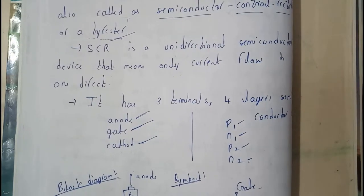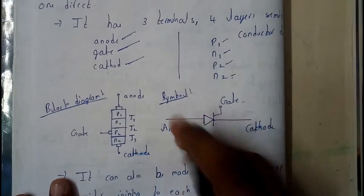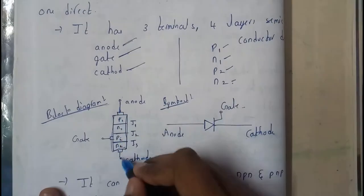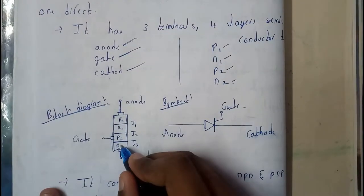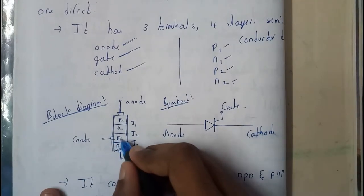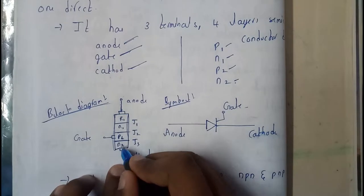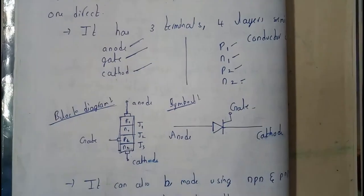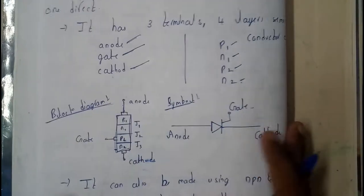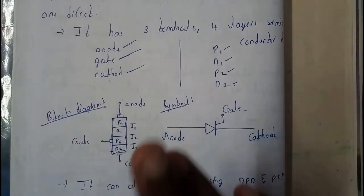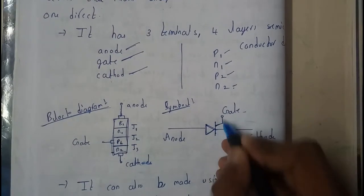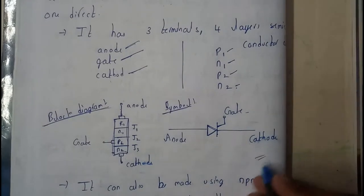Moving on to the block diagram: we have a block with P-N-P-N layers. The anode is at the top connected to P, the cathode is connected to N at the bottom, and the gate is connected to P2. The symbol of a Silicon Control Rectifier is like a diode with an anode, cathode, and a gate terminal.